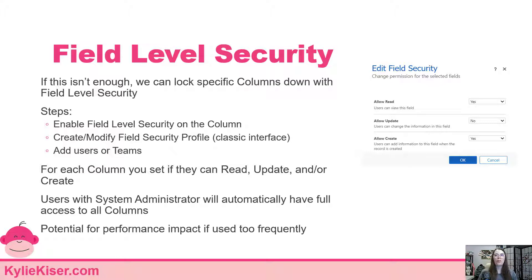If you refer back to our 'Where Do I Start' video, we talked about security by obscurity and how that's not real security. Let's say I have a social security number on my contact and I don't want certain users to be able to view it. I have the option to have separate forms — limited users have a limited user form that doesn't have the social security number on it. That's great, but they could still see it through Advanced Find, which is a problem where they could potentially access data you don't want them to have access to. That's an opportunity to look at field level security.